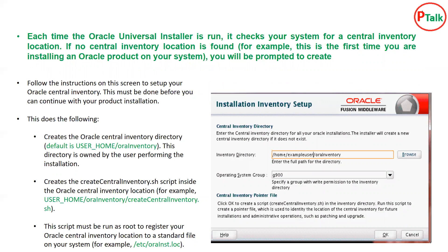You will be prompted to provide the inventory directory location along with the group for that directory. When you initiate the installer to install WebLogic on a Linux machine, after giving this information it creates a default directory named oraInventory in your home directory. Inside oraInventory it places a file called createCentralInventory.sh. Before continuing the installation, you must go to the oraInventory location and run createCentralInventory.sh using root login. This is a one-time activity that creates a central repository at /etc/oraInst.loc, which records the inventory directory location. For subsequent installations you do not need to provide these details again.